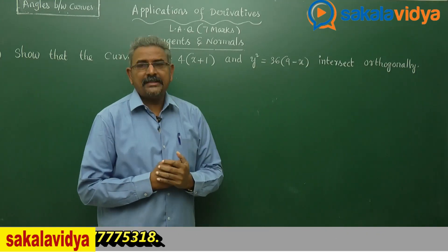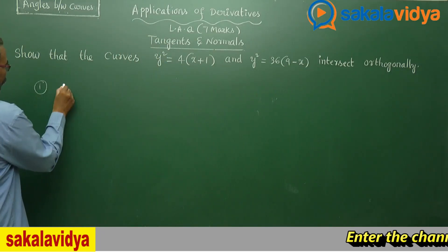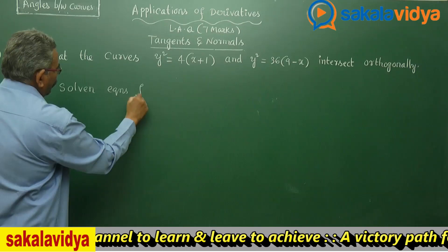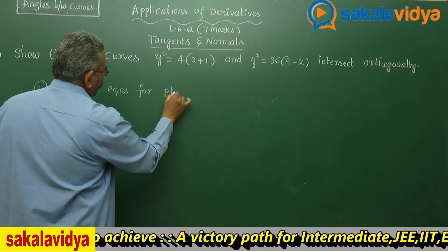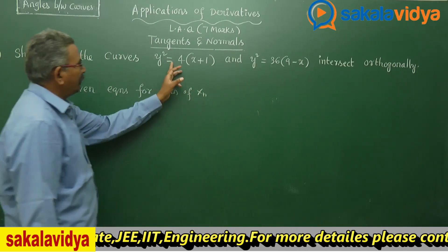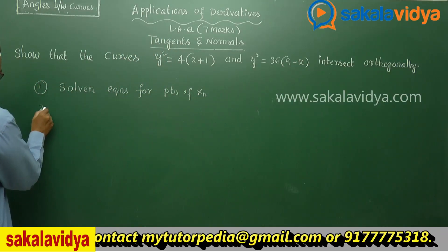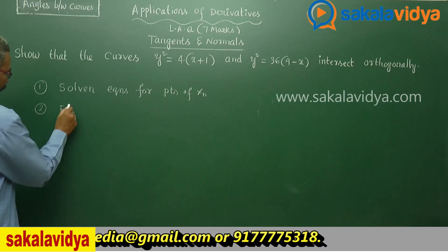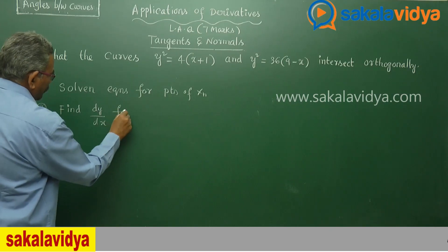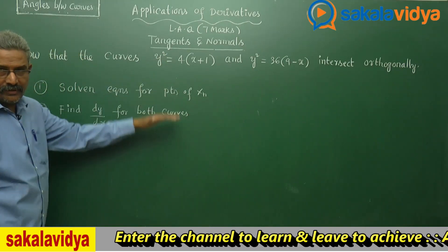What are the steps? First of all, solve the equations for points of intersection. Let us solve these two equations to get the points of intersection. Next, after that, find dy/dx for both curves.